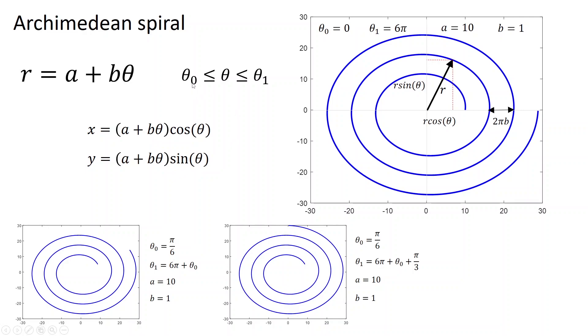Now, if theta starts from 0, if θ₀ is 0, then at the initial point, this is 0. So r will be a. That means the spiral will start from the point a.